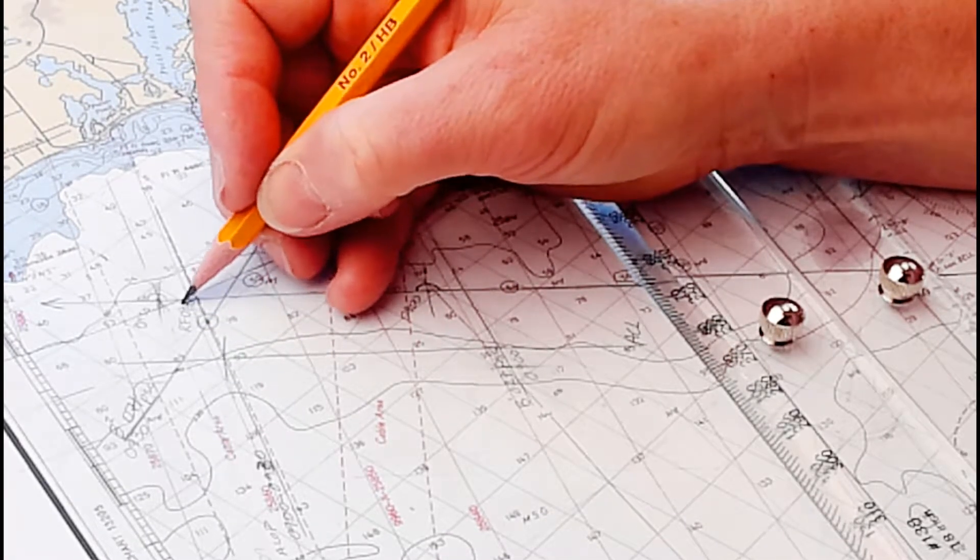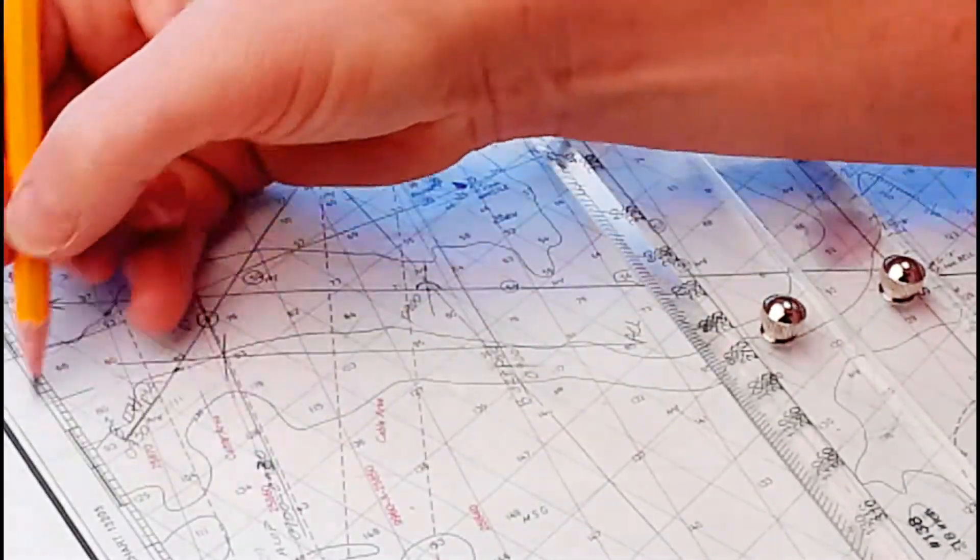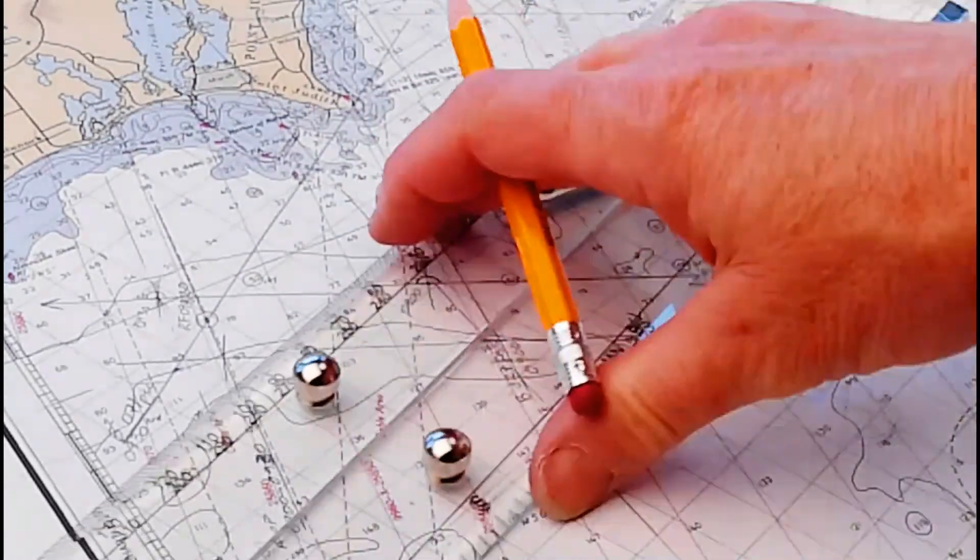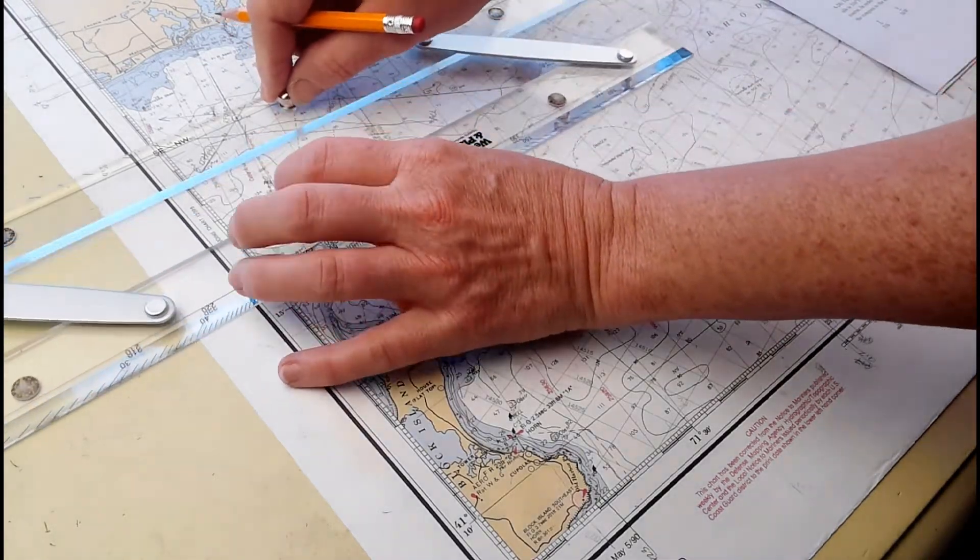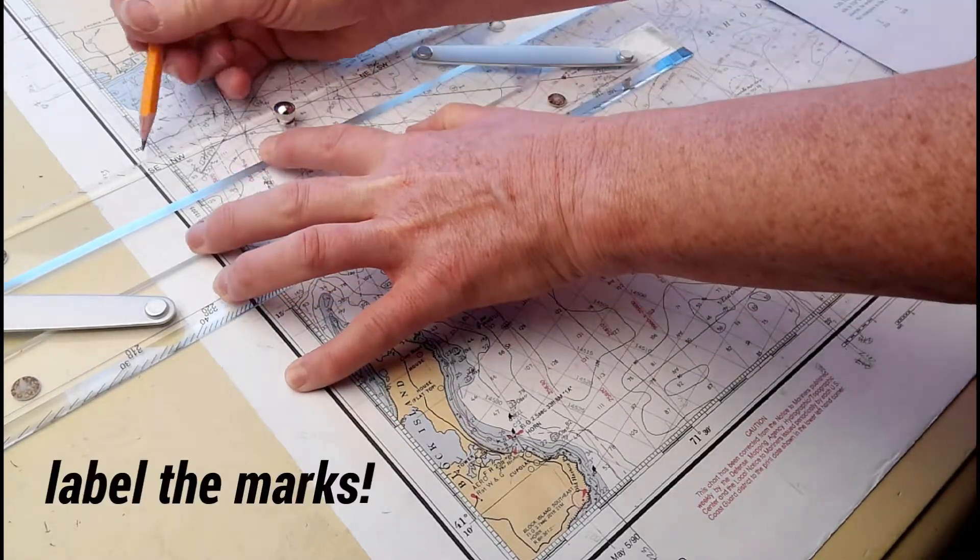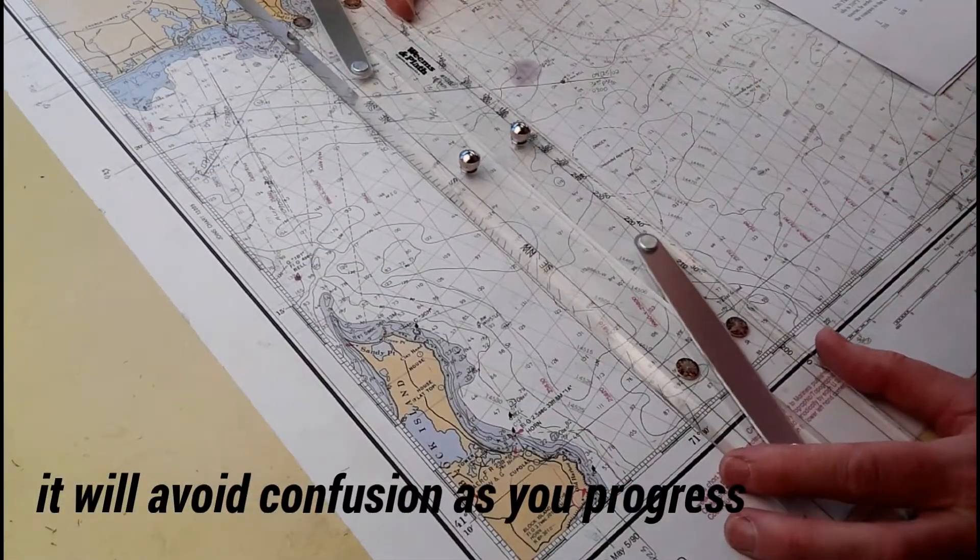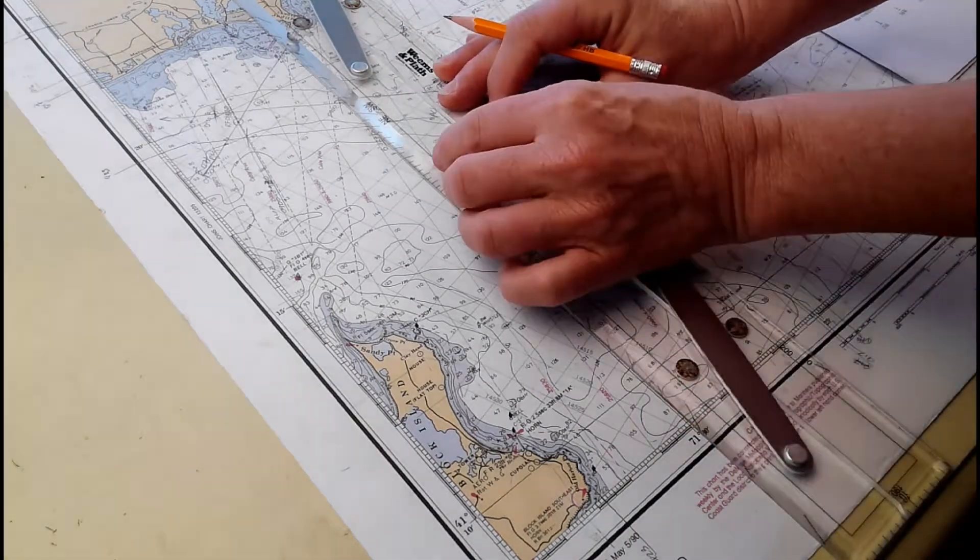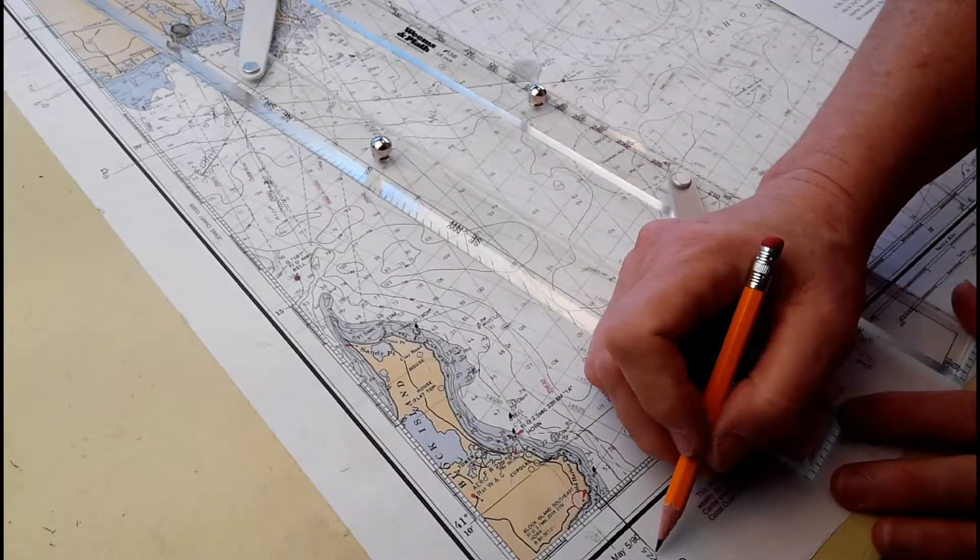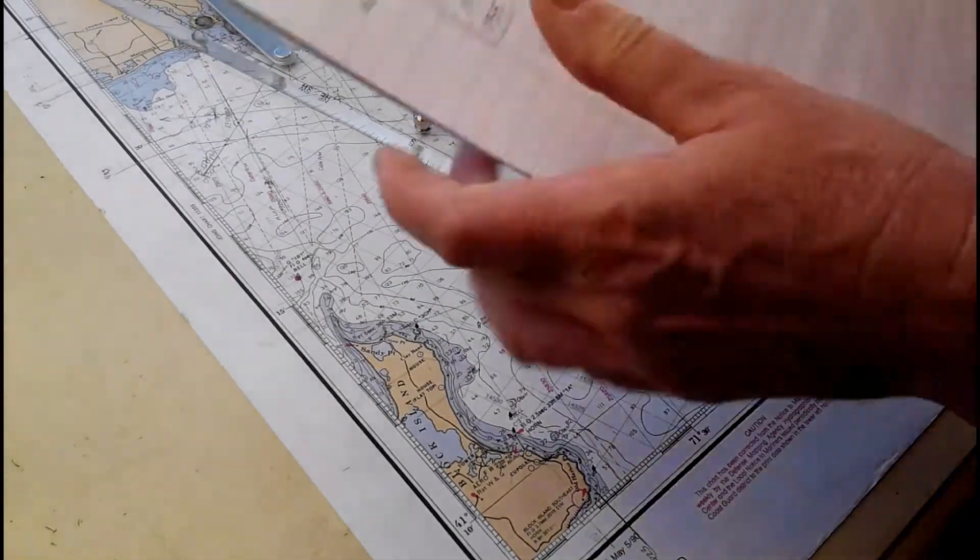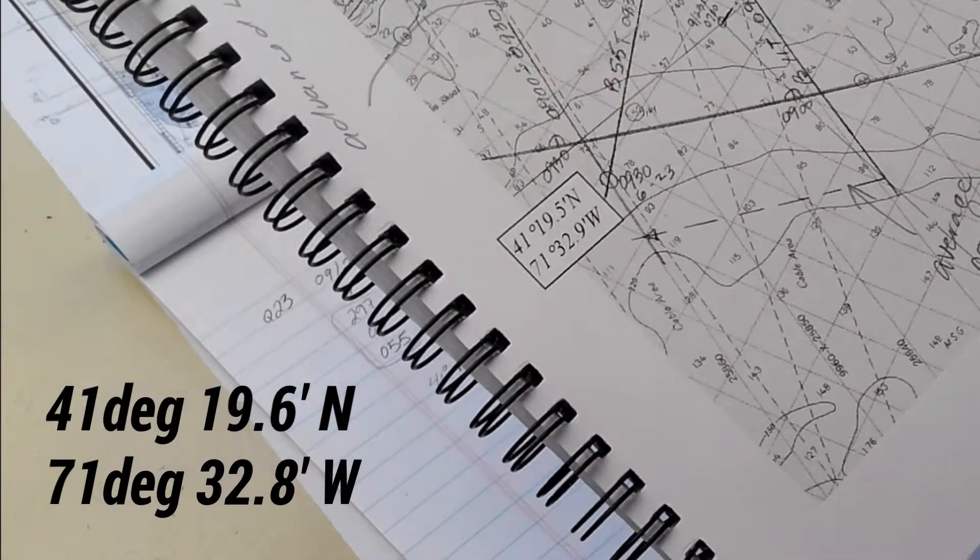I'd probably erase this and make it much neater. Now we have to take the longitude and latitude of this dot. Line it up with the closest latitude line, pass it through the dot, mark it with the question number Q23. Then the closest longitude line, slide it over through the dot, notch it, Q23. I came up with 41 degrees 19.6 minutes north, 71 degrees 32.8 minutes west.